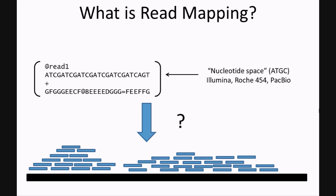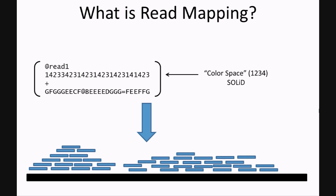However, there's another type of sequencing space called color space, where the reads consist of ones, twos, threes, and fours, and this would occur when sequencing with the ABI SOLiD platform.